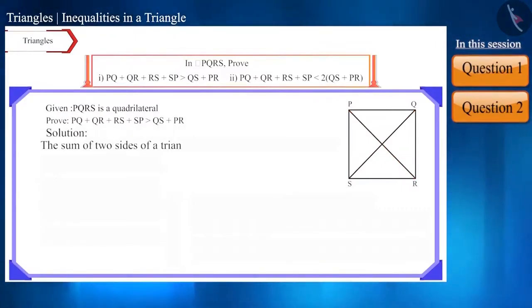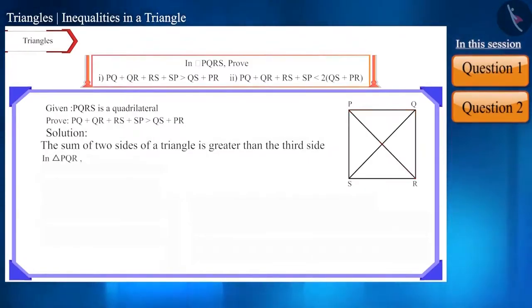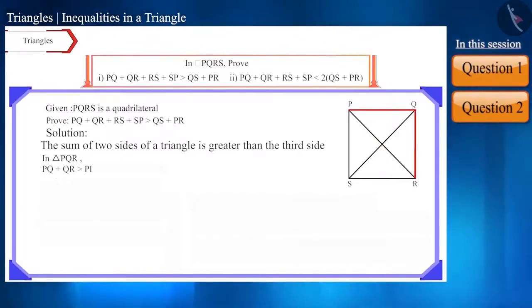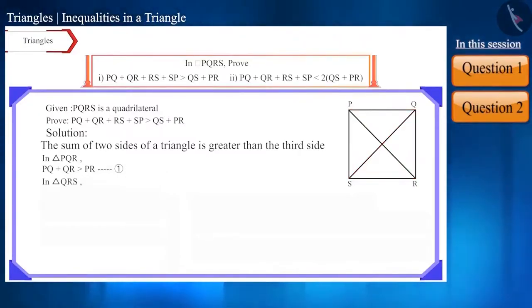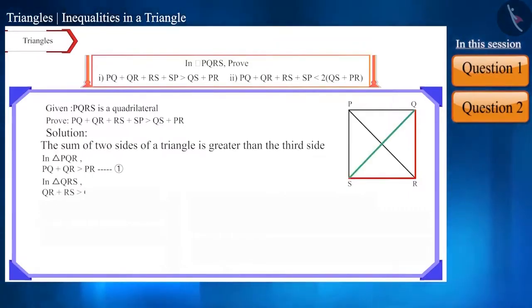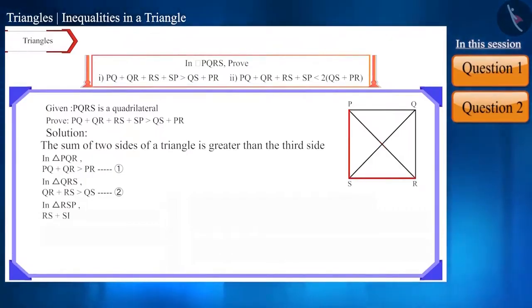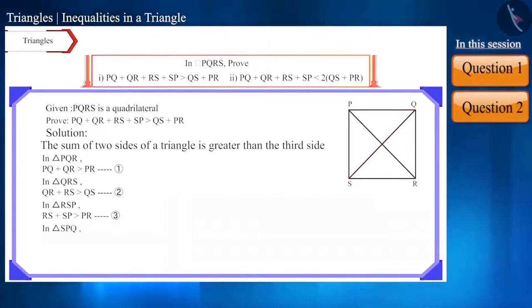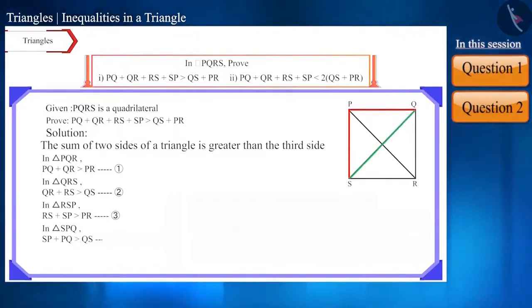In a triangle, the sum of two sides is greater than the third side. So in triangle PQR, the sum of side PQ and side QR is greater than side PR. Similarly, in triangle QRS, the sum of side QR and side RS is greater than side QS. In triangle RSP, the sum of side RS and side SP is greater than side PR. In triangle SPQ, the sum of side SP and side PQ is greater than side QS.